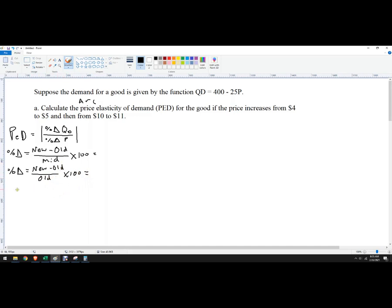So what I want to know is, we'll set up a demand schedule here. I've got price and then I've got quantity. I want to know what are the quantities at the different prices. So I've got 4 to 5, that's our first one to figure out, and then 10 to 11.